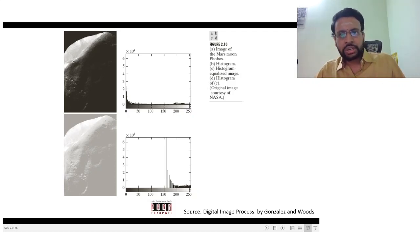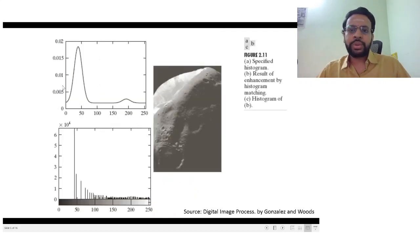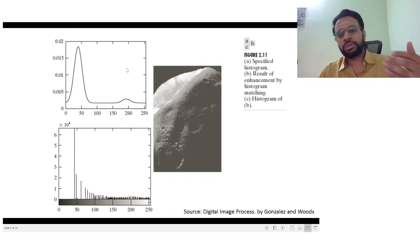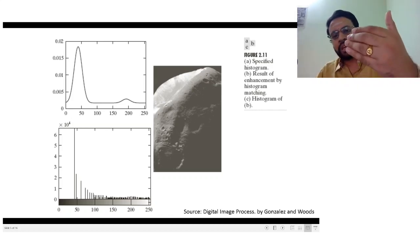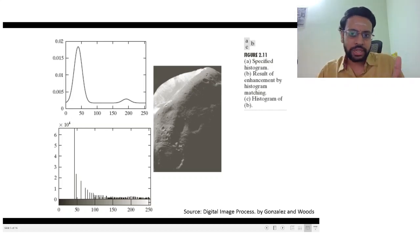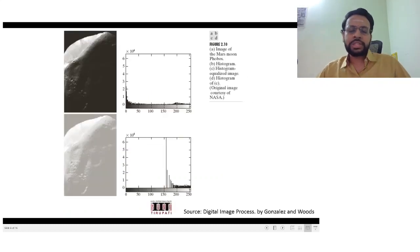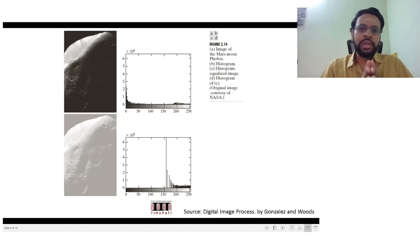Under good lighting conditions you might already have good knowledge about how the histogram should look. This is, for example, how the histogram should look. Now you use this as the specified histogram and apply histogram specification, and you would end up with this image. As you could see, the contrast and quality of the image is much better.